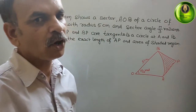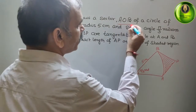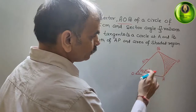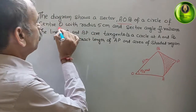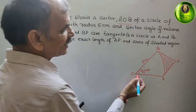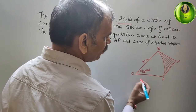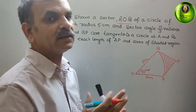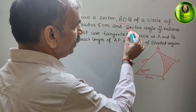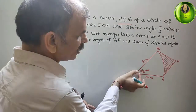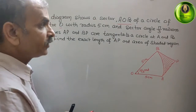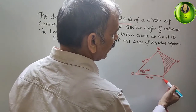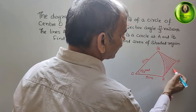Let's understand what is given. AOB is a sector — this white region. O is the center with radius 5 cm, so OB = 5 cm and OA = 5 cm because it is a sector. The sector angle is π/3 radians. The lines AP and BP are both tangents.